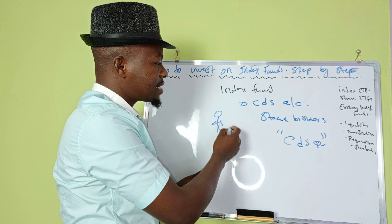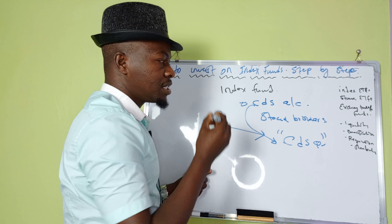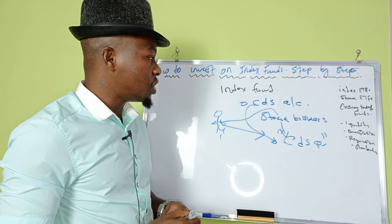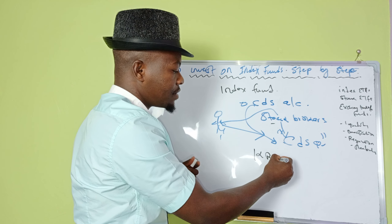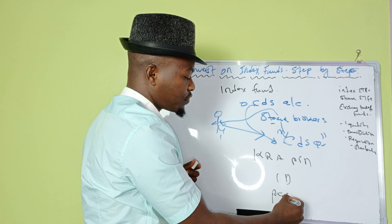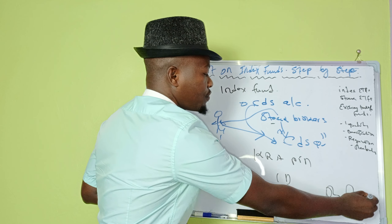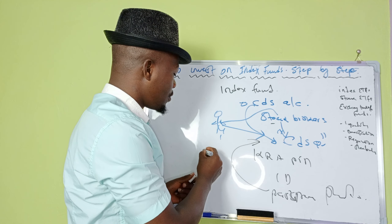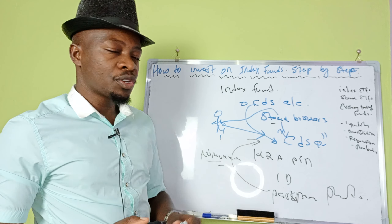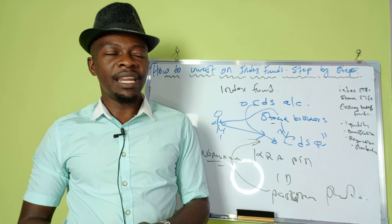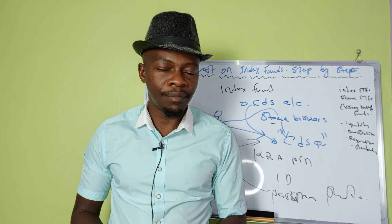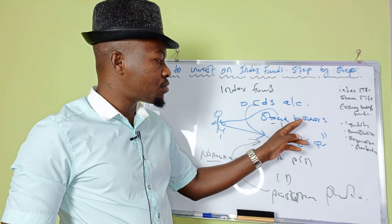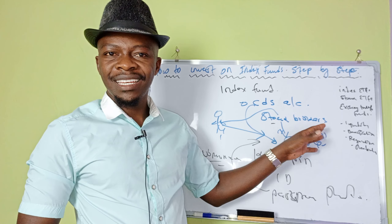Now let's get to the point of how to get started with index funds. I'll refer to the procedures for Kenyans specifically. The first thing you need to invest in ETFs is what is called a CDS account. According to the rules and regulations of Kenya, a CDS account must be opened by licensed stock brokers. Stock brokers are regulated institutions that can open a CDS account for you, because as an individual you cannot approach the CDS body directly.